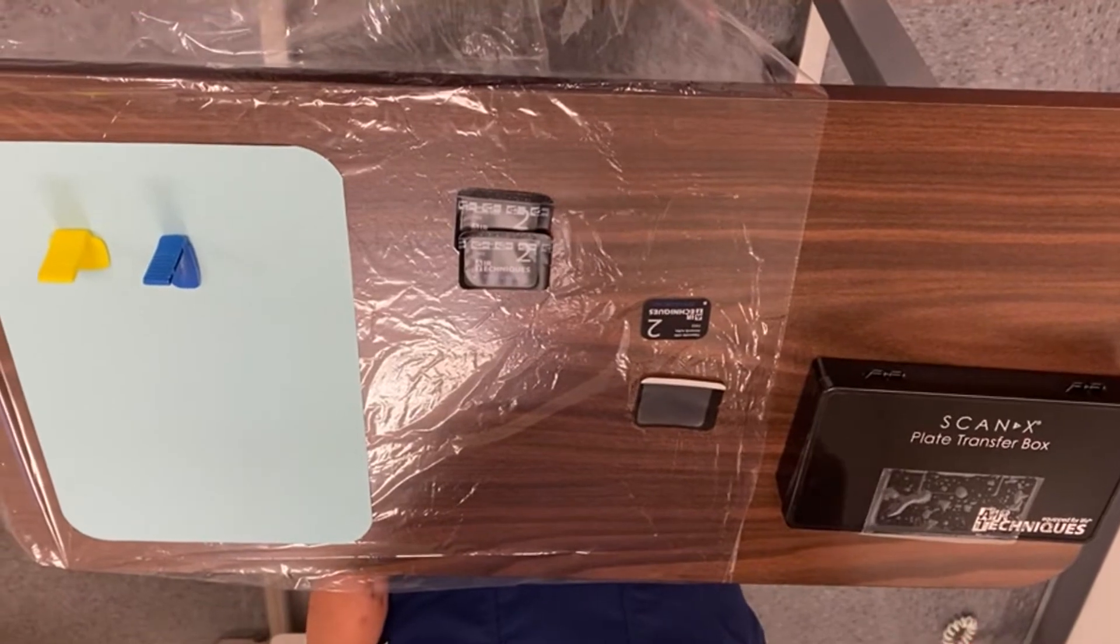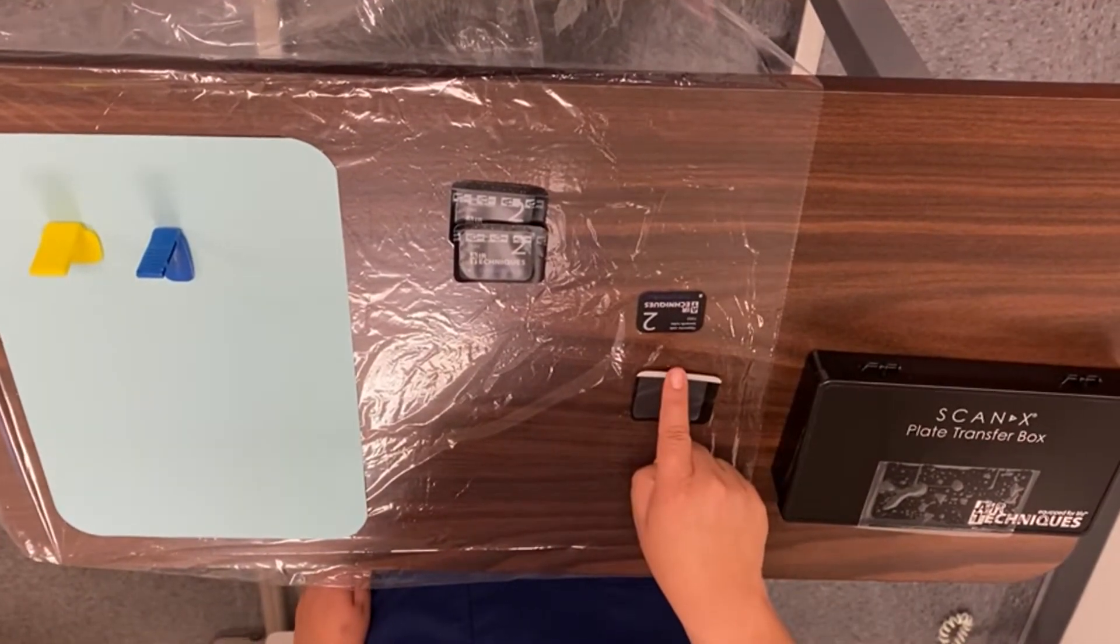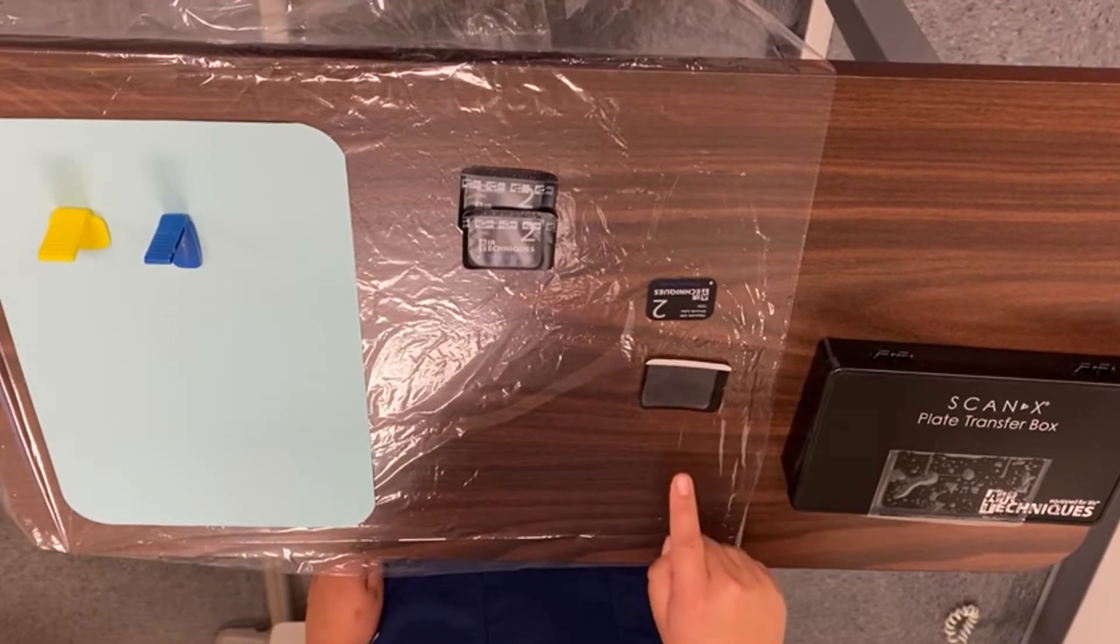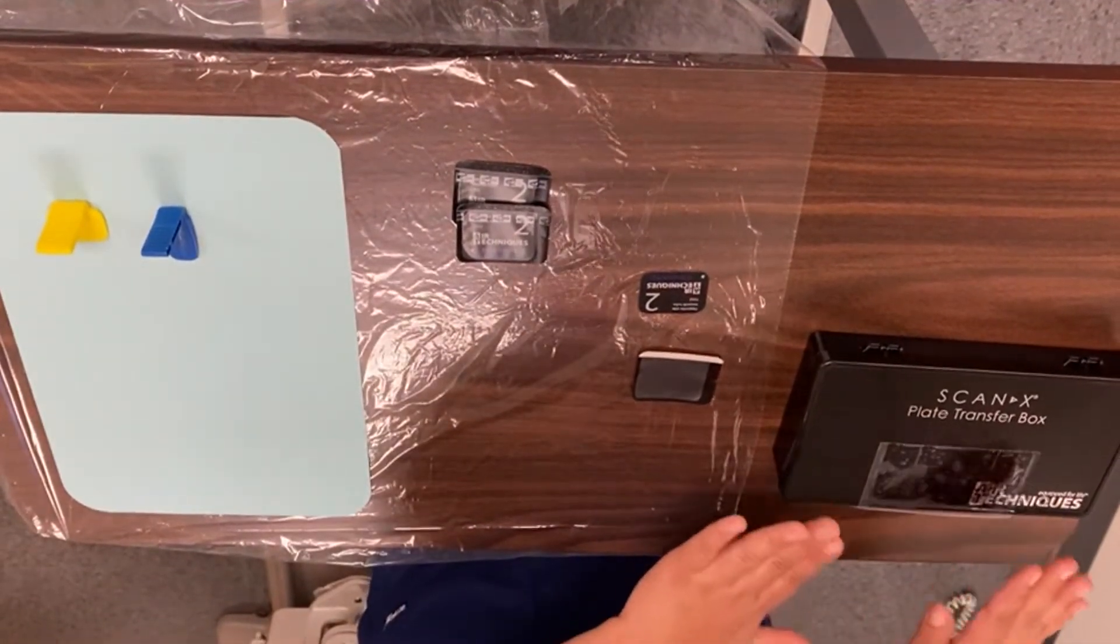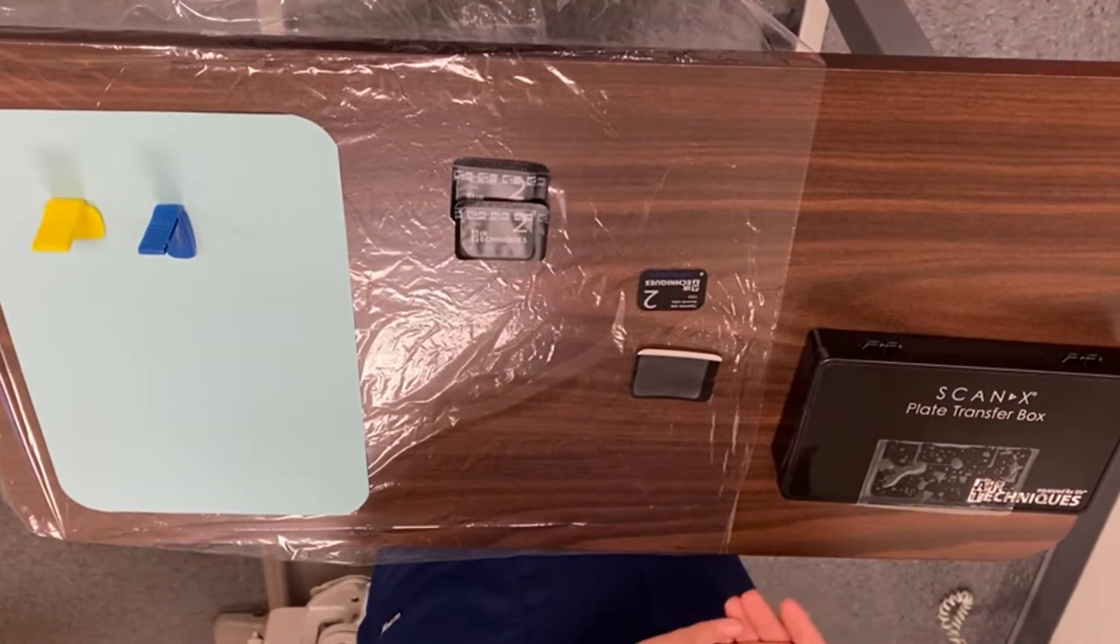Aside from that, we'll need the phosphor plates that will go into the phosphor plate sleeves, and from there they will go into the box to be protected from light transmission since they are light-sensitive to avoid any errors in the x-rays.